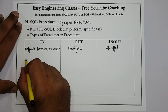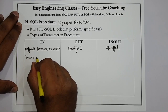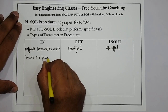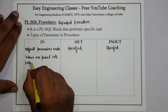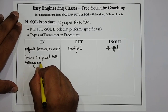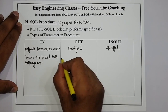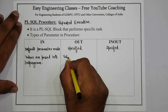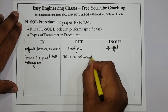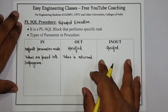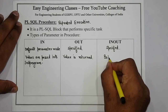With the help of the IN parameter, values are passed into the sub-programs. Whereas with OUT, a value is returned to the calling environment.